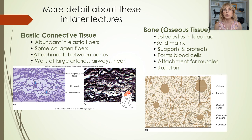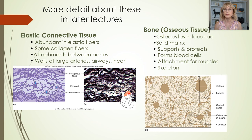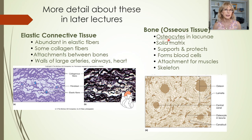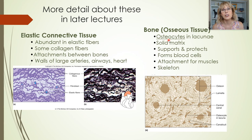We also have bone, and you're going to be learning about bone and the organization of bone both in lecture and in two labs where you will learn the names of bones. Bone is referred to as osseous tissue. The prefix 'oste-' (O-S-T-E) is the typical prefix for anything relating to bone, and we'll talk a lot more about bone tissue in later lectures.